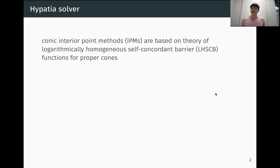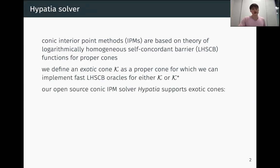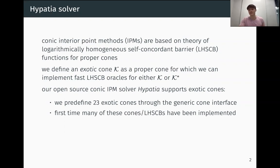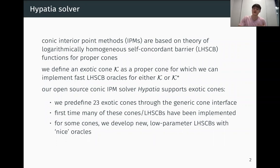Conic interior point methods are based on the theory of logarithmically homogeneous self-concordant barrier functions for proper cones. We define an exotic cone K as a proper cone for which we can implement fast LHSCB oracles for either K or its dual cone K star, but not necessarily both. Our open source conic interior point method solver Hypatia supports exotic cones. And we've already predefined 23 exotic cones through Hypatia's generic cone interface. This is the first time that many of these cones and barriers have been implemented. And for some of these cones, we actually develop new low parameter LHSCBs with nice oracles, and I'll describe later what that means.